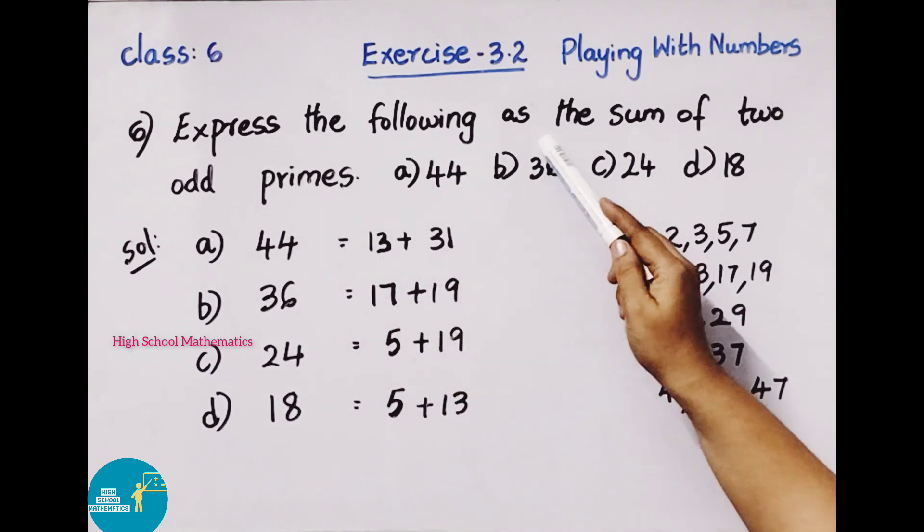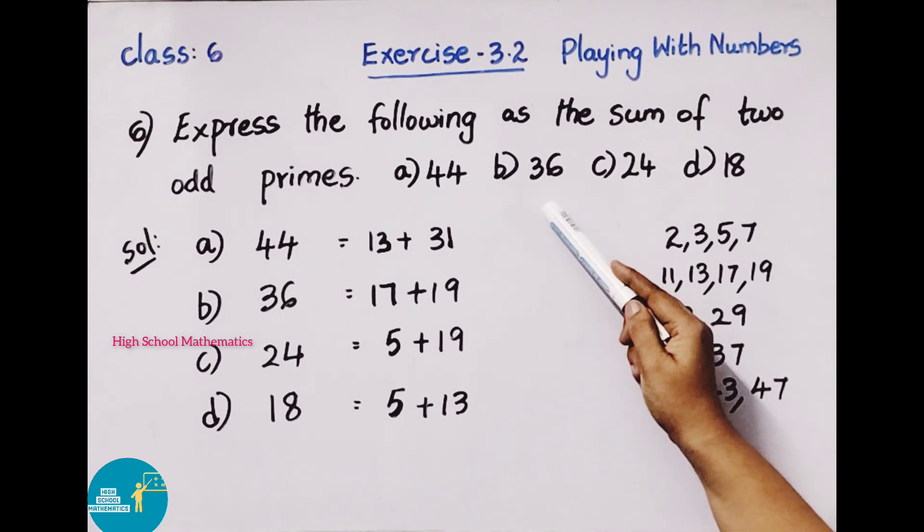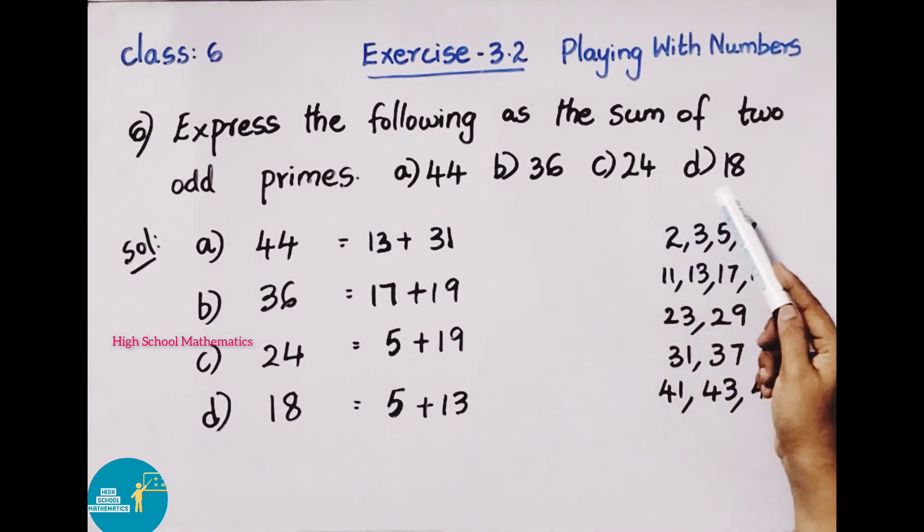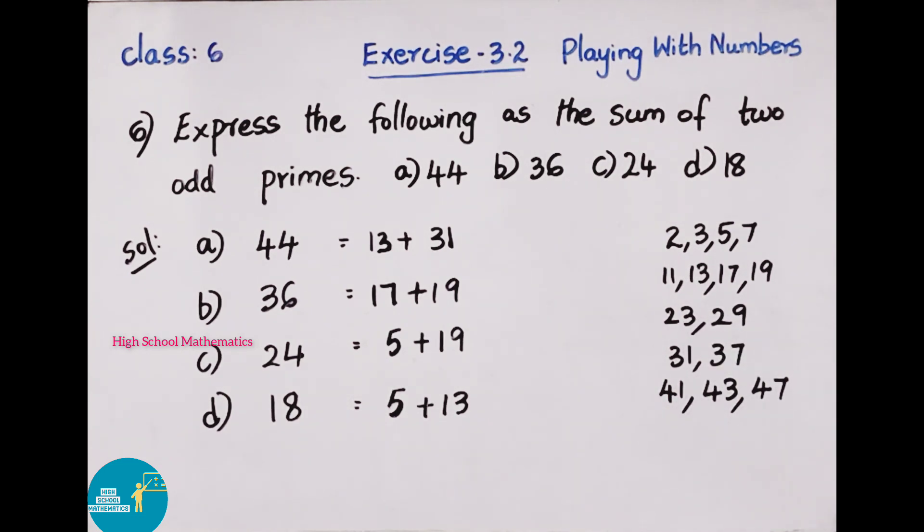Sixth sum: Express the following as the sum of 2 odd primes. Question 44, b) 36, c) 24, d) 18. If you have a solution, first one is 44. We have a 44 number, sum of 2 odd primes. First, we have 1 to 50 prime numbers list. We have a list of 2 odd primes. What is the add? 13 and 31. Add these and you get 44.